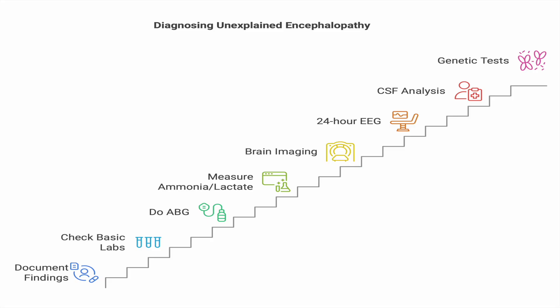The diagnostic approach for metabolic encephalopathy is: document your neurological findings, perform basic lab tests covering the various organs discussed, don't forget thyroid and pancreas, do an ABG, check ammonia and lactate, do imaging, perform 24-hour EEG monitoring, CSF analysis, and finally genetic testing. By doing all of this, you will find a reason for the metabolic encephalopathy.